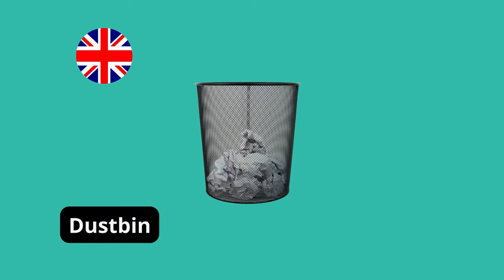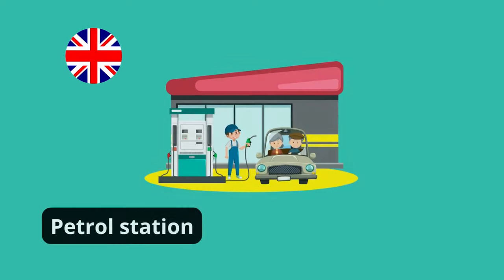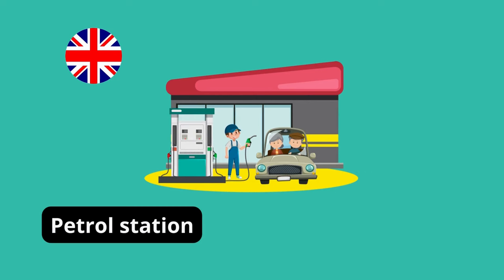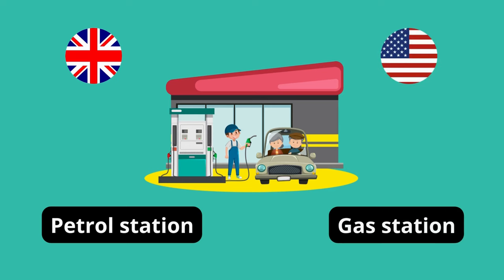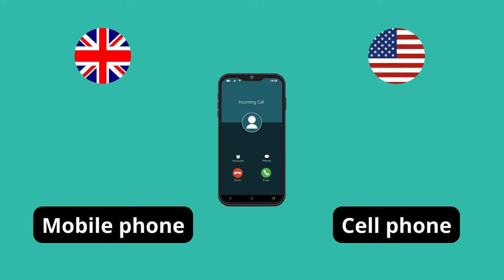Dustbin (British English) — Trash can (American English). Petrol station (British English) — Gas station (American English). Mobile phone (British English) — Cell phone (American English).